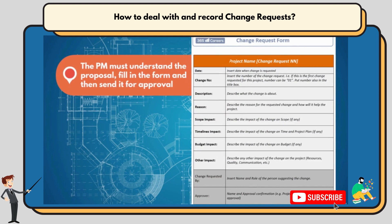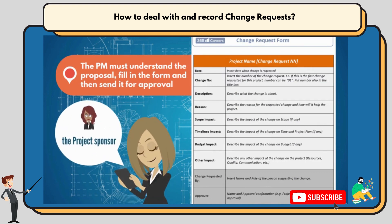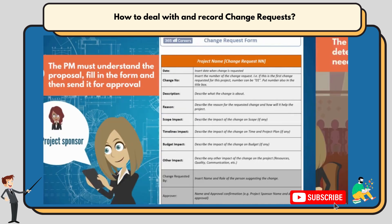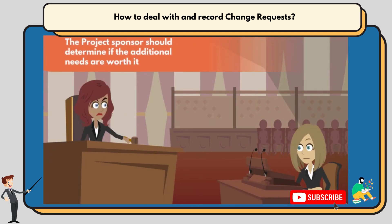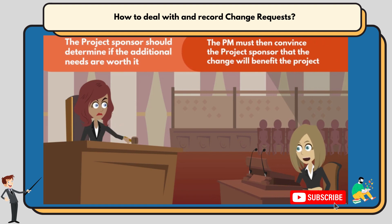The project manager must understand the proposal, fill in the form, and then send it for approval. Who will the project manager send the change request form to? The project sponsor, of course. Since they have provided the needed resources, they should also determine if the additional needs are worth it. If the project manager has concluded that the change will benefit the project, then they must convince the project sponsor.